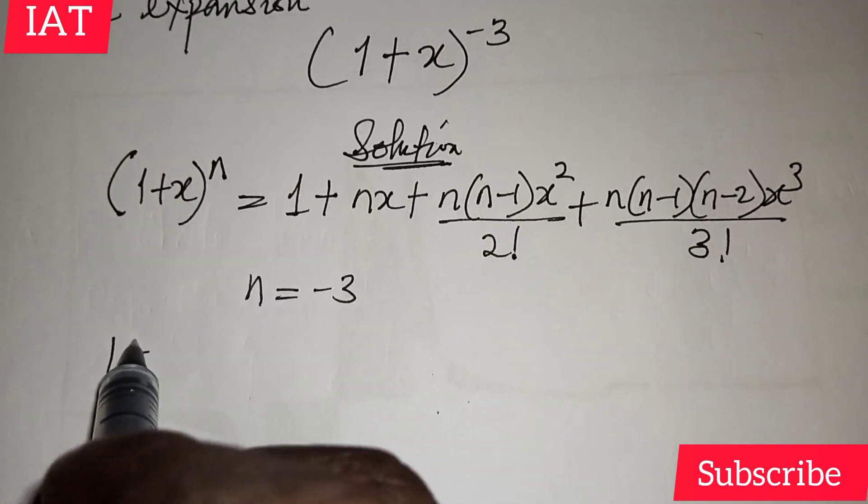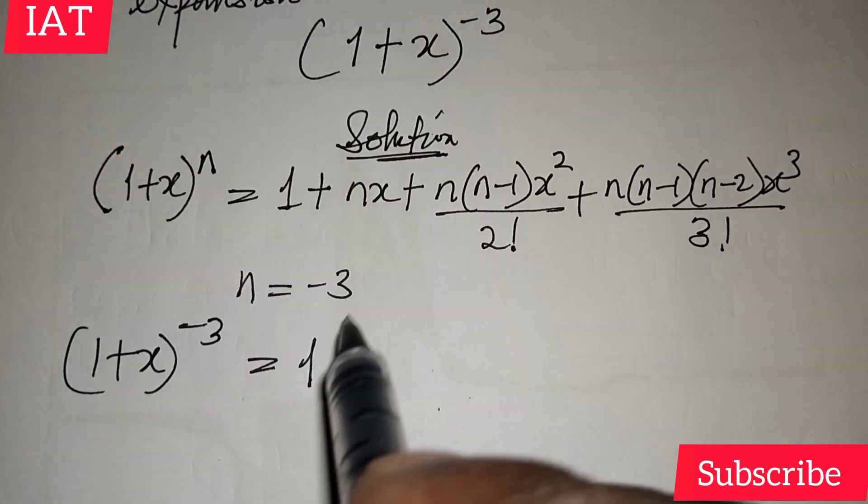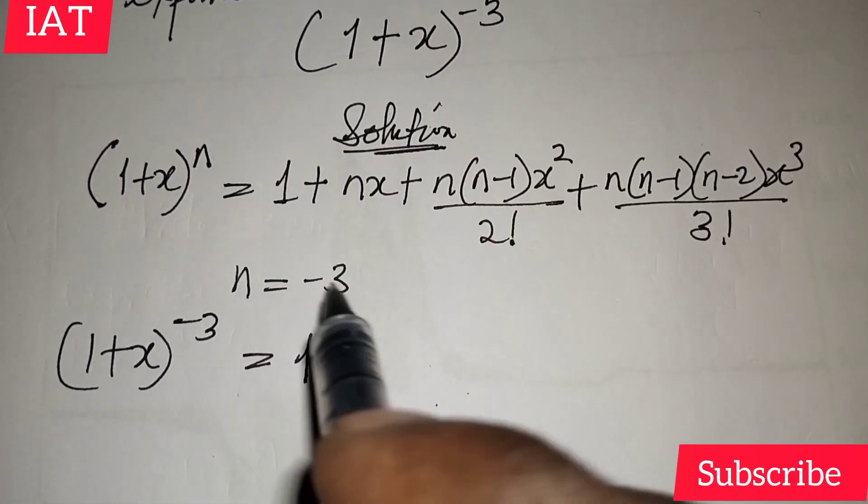So we have that (1+x) all to the power of -3 will be equal to 1. Anywhere you see n here, just replace it with -3.